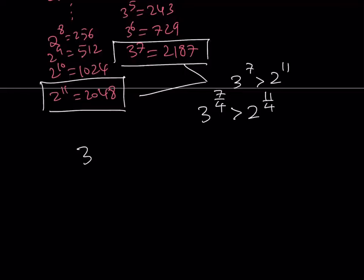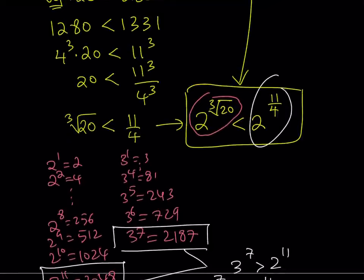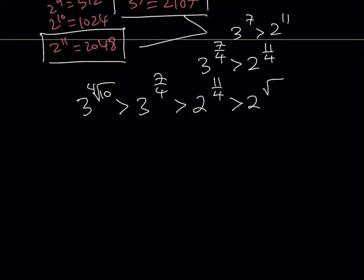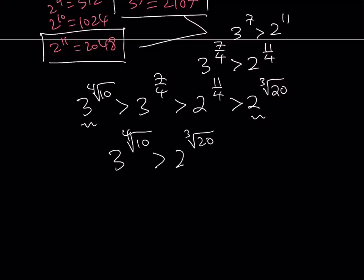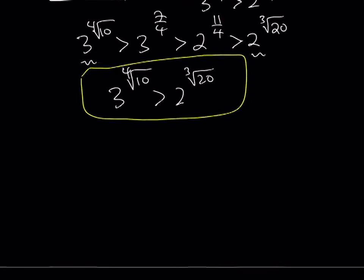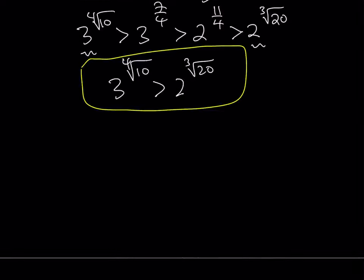Now we can put it all together. We have 3 to the power 4th root of 10 is greater than 3 to the power 7/4, and 3 to the power 7/4 is greater than 2 to the power 11/4, and 2 to the power 11/4 is greater than 2 to the power cube root of 20. Using the transitive property, this gives us that 3 to the power 4th root of 10 is greater than 2 to the power cube root of 20. Thank you for watching — please comment, like, and subscribe. See you tomorrow!